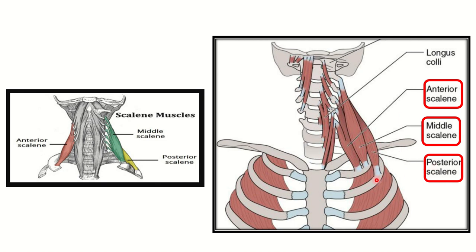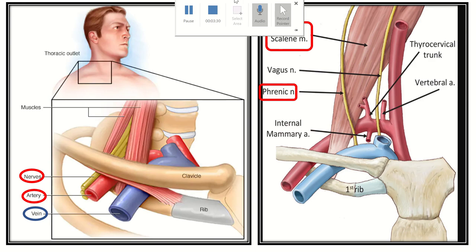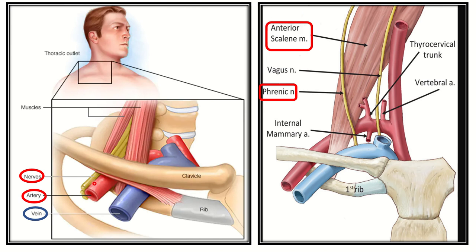The posterior scalene differs from the anterior and middle scalene because it inserts into the second rib while anterior and middle scalene insert into the first rib. In this picture, which is very important for answering this question, we can see the anterior scalene and the middle scalene muscles. Through the gap between them, two important structures pass: an artery and a nerve.